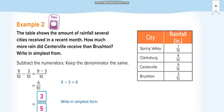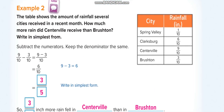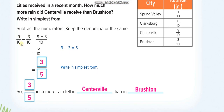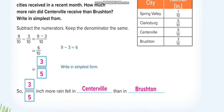Similarly, Example 2: 9 over 10 minus 3 over 10 equals 6 over 10. Then you simplify it — divide by 2 up and down — so it becomes 3 over 5.